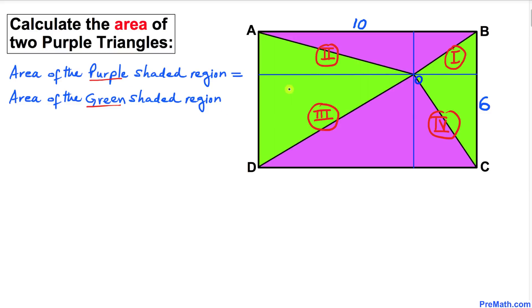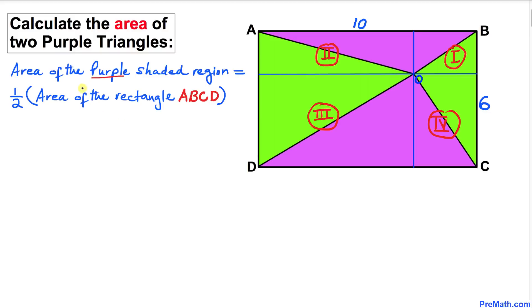Therefore we conclude that the area of this purple shaded region is equal to half of the area of the whole rectangle ABCD. Here's the area of a rectangle formula: area equals length times width.